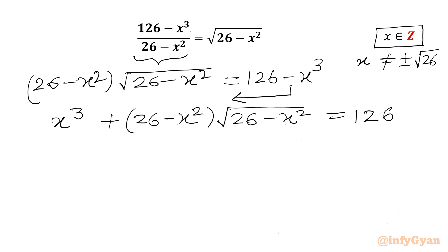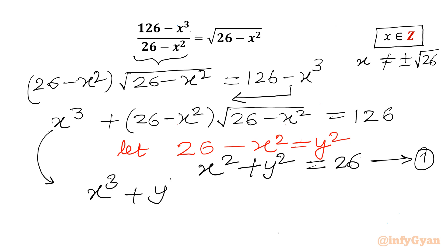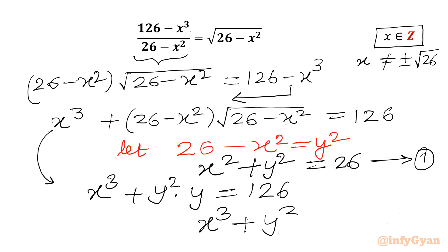Now I will use substitution. Let us consider 26 minus x² equal to y². So from here, x² plus y² will be equal to 26 — let us call this equation 1. And this equation will become x³ plus y² times y equal to 126, or we can write our second equation as x³ plus y³ equal to 126.